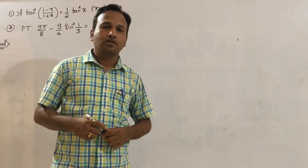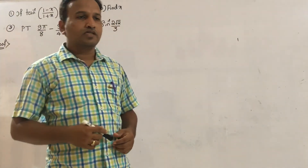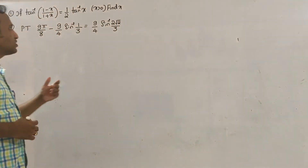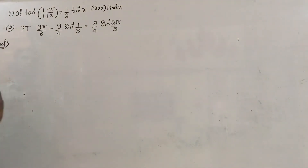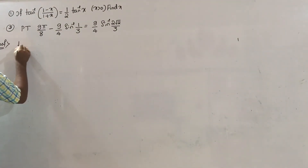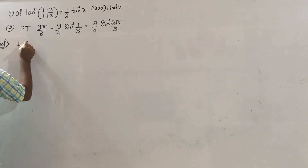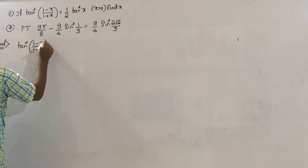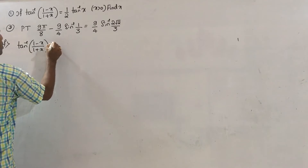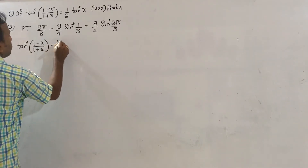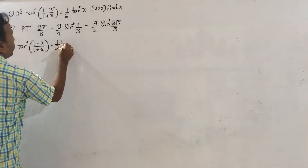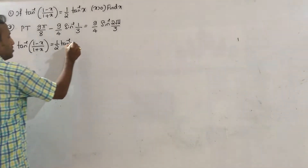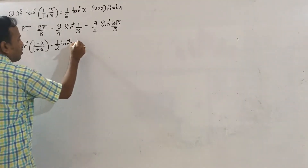Hello and welcome. Let us continue with the remaining problems. First one: tan inverse of (1 minus x) divided by (1 plus x) equals one half tan inverse x. See here, one more formula.